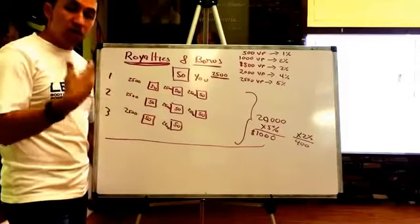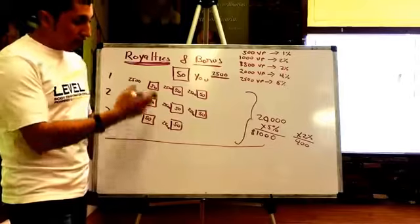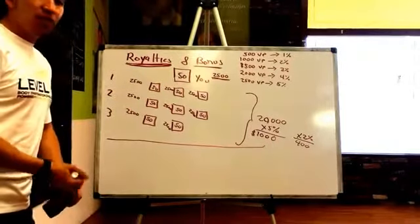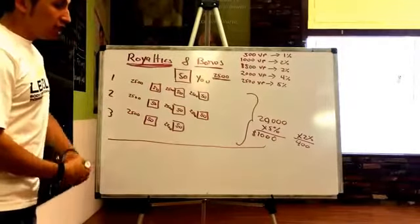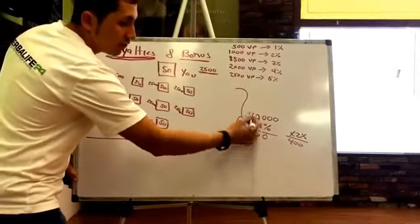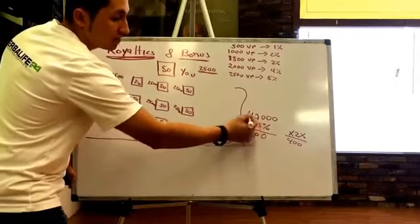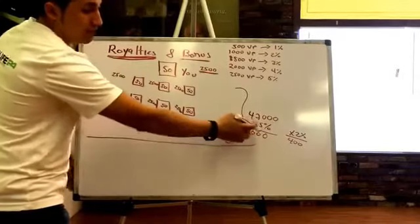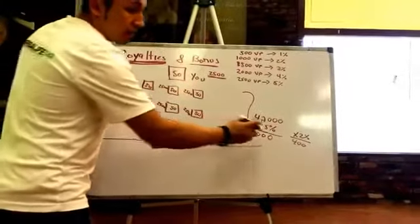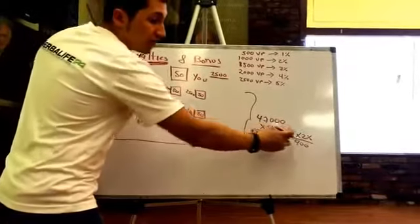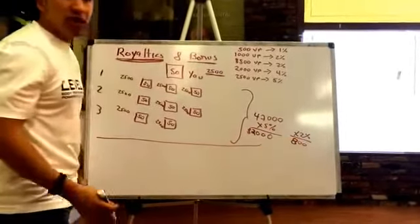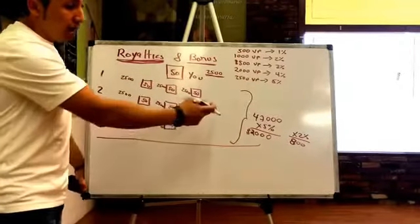You don't need exactly 8, 10, or 20 supervisors to become a GET Team member — it depends on how you work with your group and what tools you're using. Now let's say your group grows to 40,000 volume points. Five percent of 40,000 is $2,000 in royalties. As a GET Team member you also get the extra 2% bonus, so 2% of 40,000 is $800 in bonus.